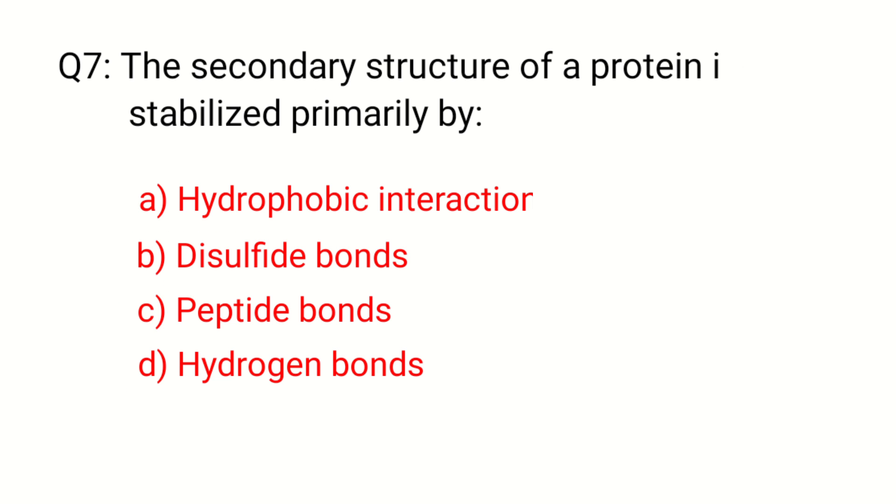Question 7. The secondary structure of a protein is stabilized primarily by... The correct answer is option D, Hydrogen bonds.